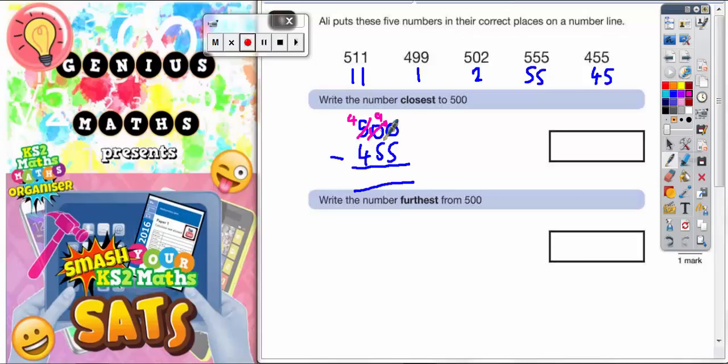Now we can do it because the 0 on the end has now become a 10. So 10 take away 5 is 5. 9 take away 5 is 4. And 4 take away 4 is nothing. So the gap from 500 down to 455 is 45, which is what we set up here.